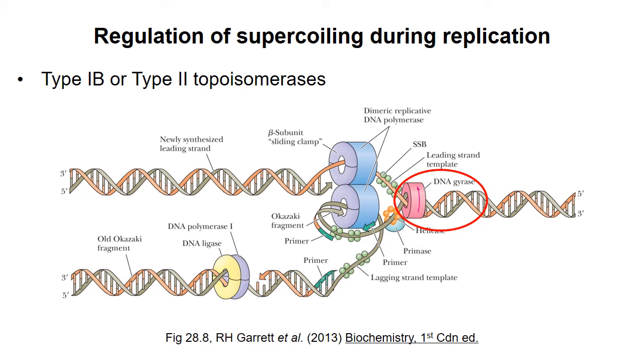The topoisomerases that remove most of the supercoiling are actually type 2 enzymes, such as DNA gyrase in E. coli. This enzyme can introduce negative supercoiling, which counteracts positive supercoiling.